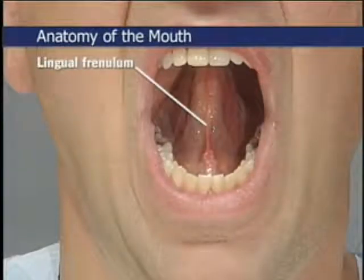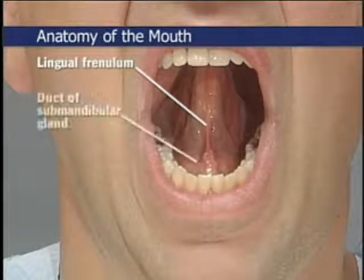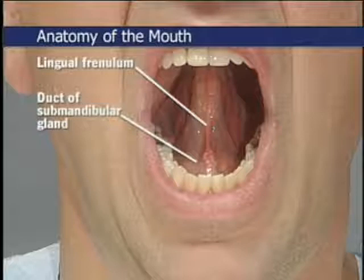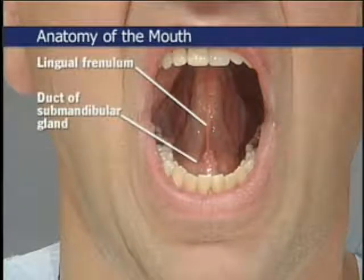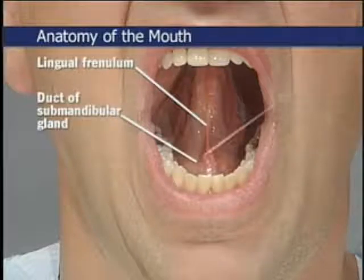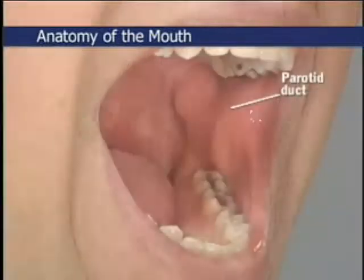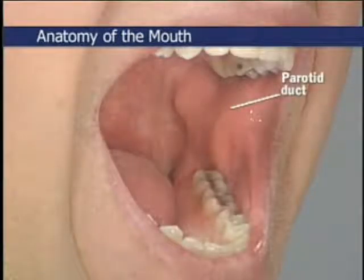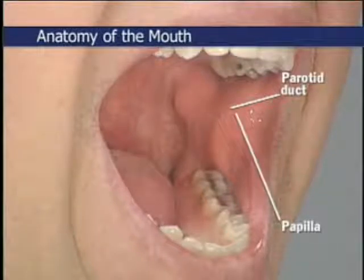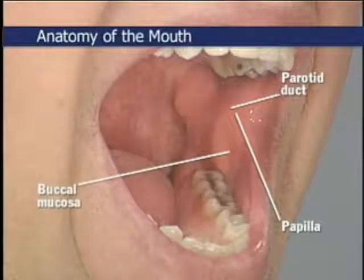The undersurface of the tongue has no papillae. Note the midline lingual frenulum that connects the tongue to the floor of the mouth. At the base of the tongue, the ducts of the submandibular gland — known as Wharton's ducts — pass forward and medially, opening on papillae on each side of the lingual frenulum. Each parotid duct, or Stensen's duct, empties into the mouth near the upper second molar, where a small papilla frequently marks its location. The buccal mucosa lines the cheeks.